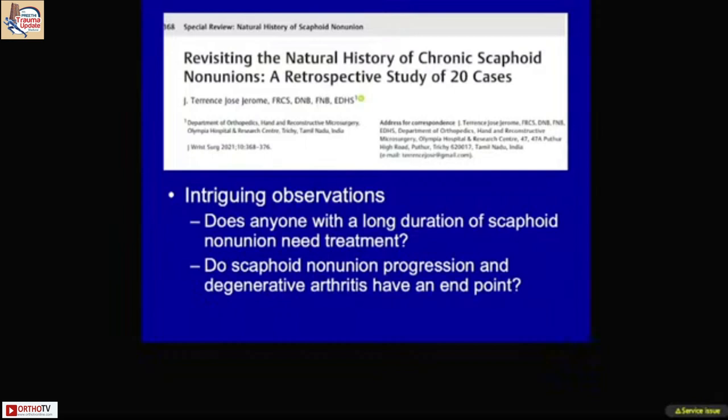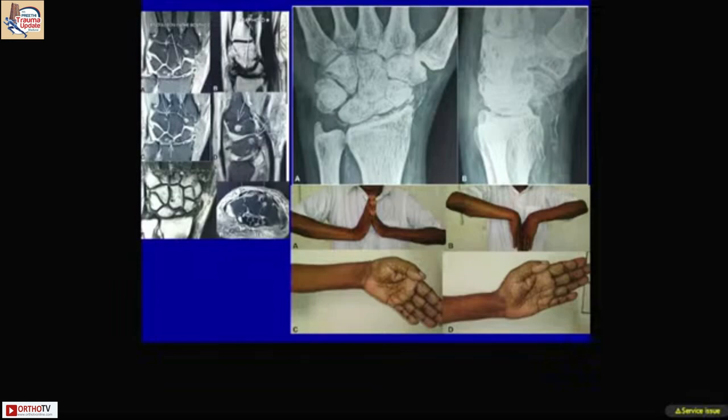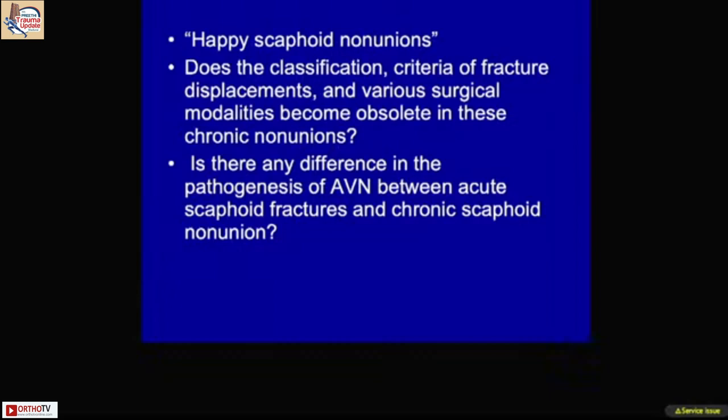Importantly, certain patients with scaphoid non-union do well without surgery. We retrospectively reviewed 20 patients with scaphoid non-union who were happy and did not want surgery. Not all scaphoid non-unions require surgery; however, if collapse — what we call SNAC deformity — is present, they may develop arthritis. One patient, whom we call a 'happy scaphoid non-union,' came to us for a different problem entirely. These non-unions can do well without management over longer durations, though some cases still require surgery.